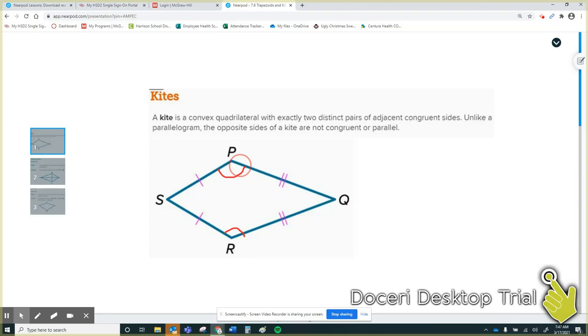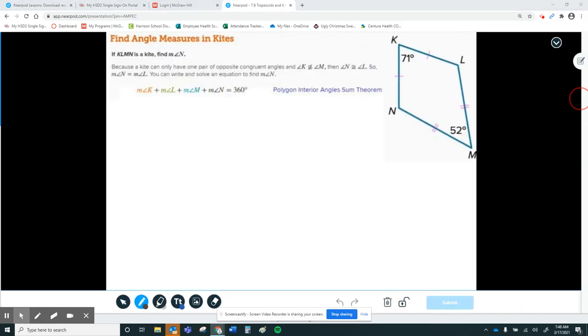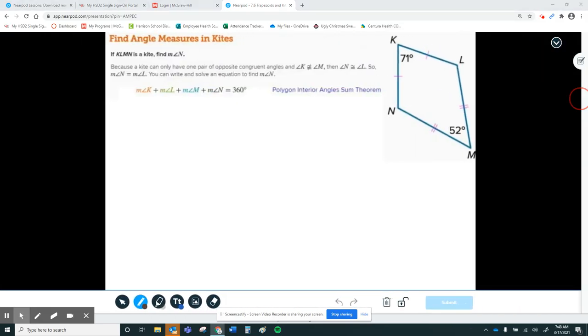So P and R are congruent. These two are congruent. These two are congruent. And my diagonals are not congruent, but they are perpendicular, meaning they create 90-degree angles. So again, angles of a quadrilateral add up to 360, and my job is to find angle N.